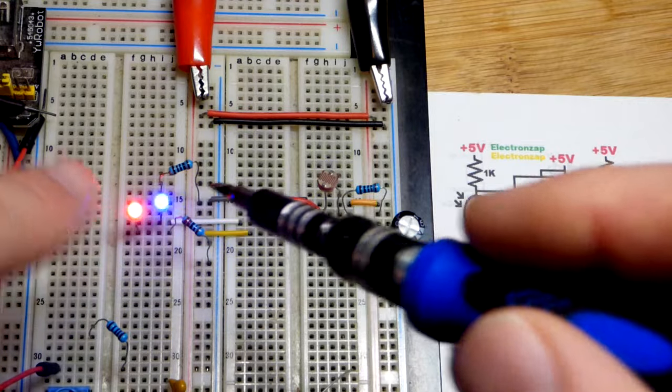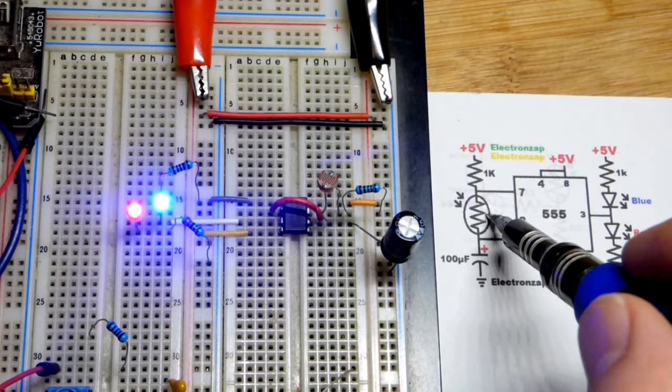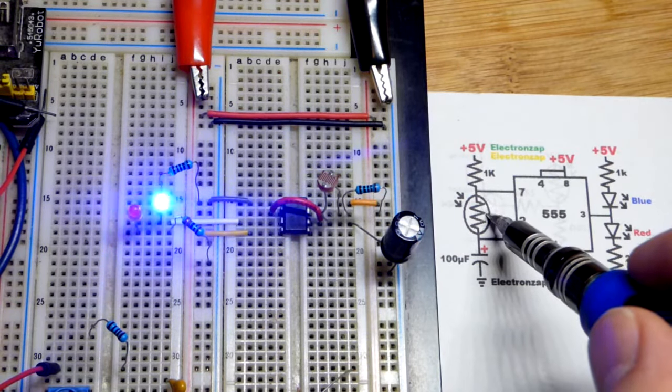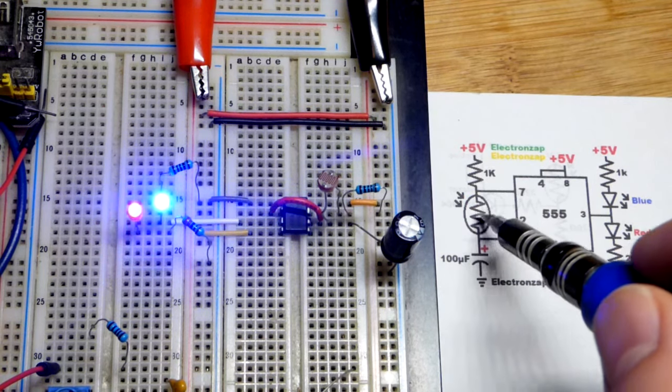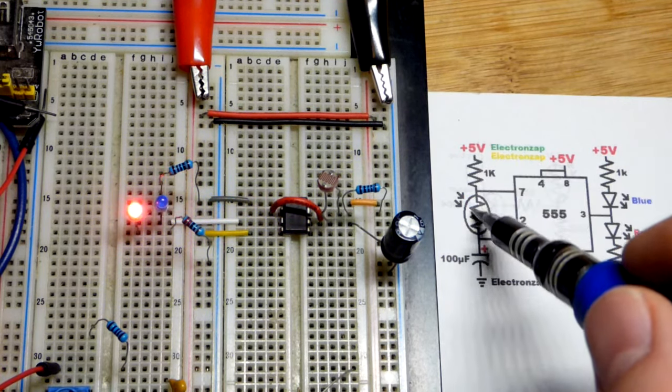But we will never have that. We can kind of get close to that if it's dark. But when it is bright, we got almost no resistance here, and we got 1,000 ohms.